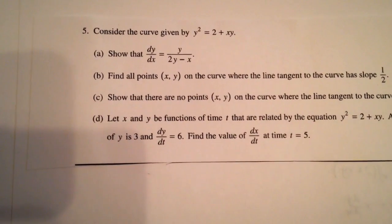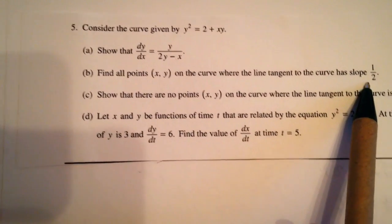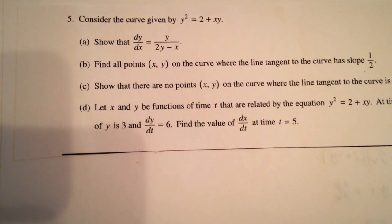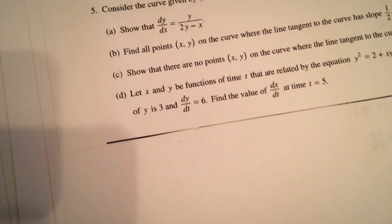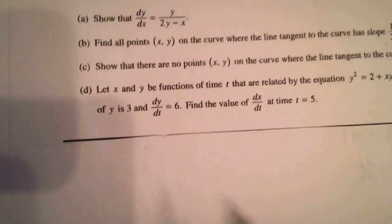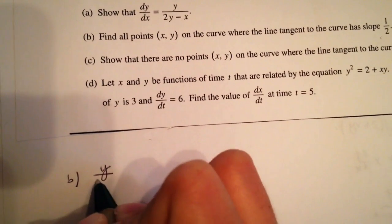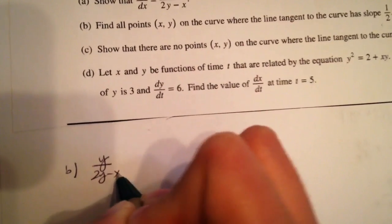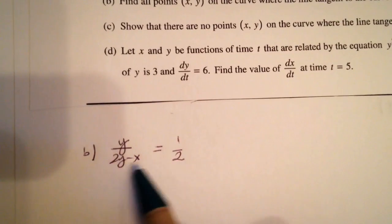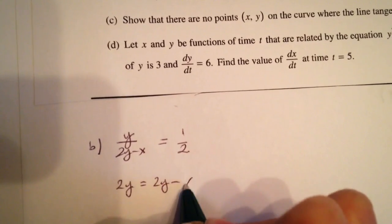Now we move on to part B, where we need to find what points on the curve have a tangent line with slope equal to one half. To find that, we set the derivative equal to one half. Our derivative is y over 2y minus x, and we set that equal to one half, then cross multiply to get 2y equal to 2y minus x.